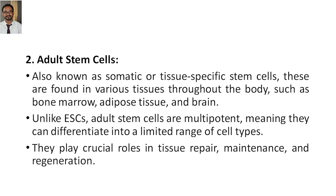The next type is adult stem cells, also known as somatic cells or tissue-specific stem cells. For example, neurons are highly specific to the brain only. These cells are found in various tissues throughout the body — bone marrow, adipose tissue, and brain. Unlike embryonic stem cells, adult stem cells are multipotent, meaning they can differentiate into only a limited range of cell types. They play a crucial role in tissue repair, maintenance, and regenerative medicine.